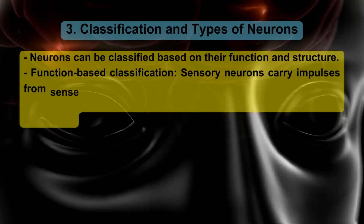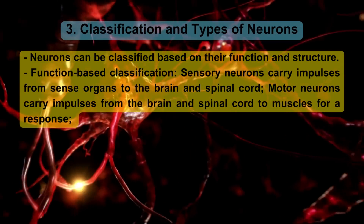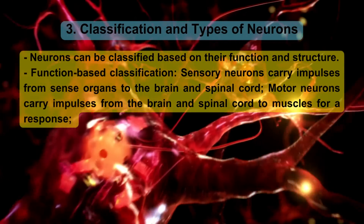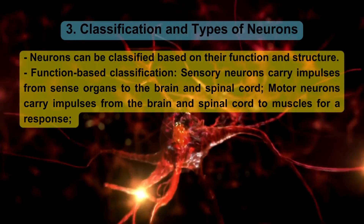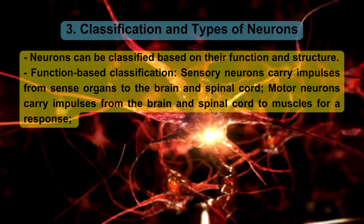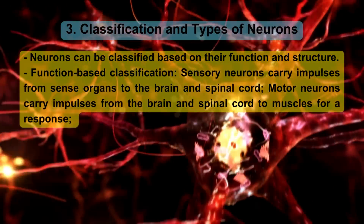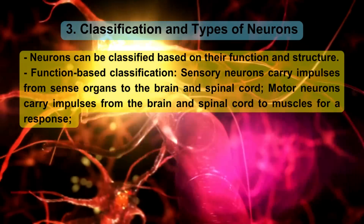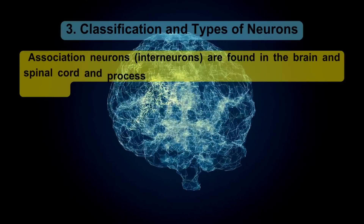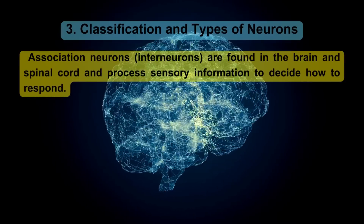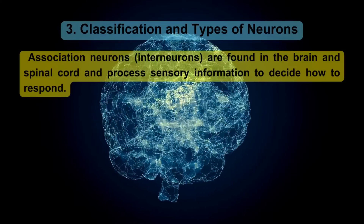Neurons can be classified based on their function and structure. Function-based classification: Sensory neurons carry impulses from sense organs to the brain and spinal cord. Motor neurons carry impulses from the brain and spinal cord to muscles for a response. Association neurons, or interneurons, are found in the brain and spinal cord and process sensory information to decide how to respond.